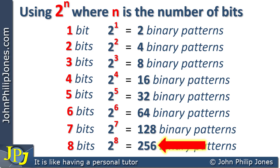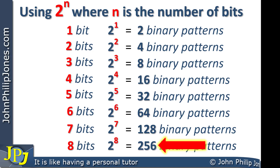I recommend that you learn the sequence: two, four, eight, 16, 32, 64, 128, 256. I also recommend continuing after 256: you will have 512, then 1024, then 2048, then 4096. Getting up to there is good enough to memorize, as you can always fall back on your calculator for other values. I would also recommend that two to the 10 equaling 1024 is an important one to remember when you have 10 bits.